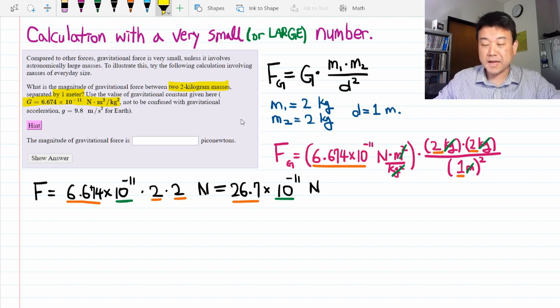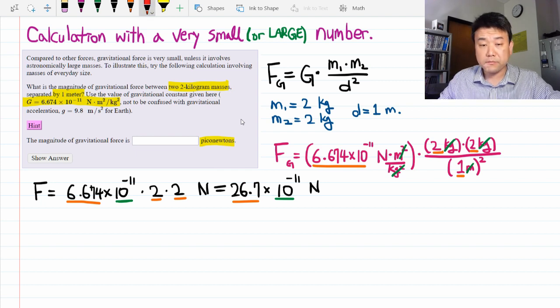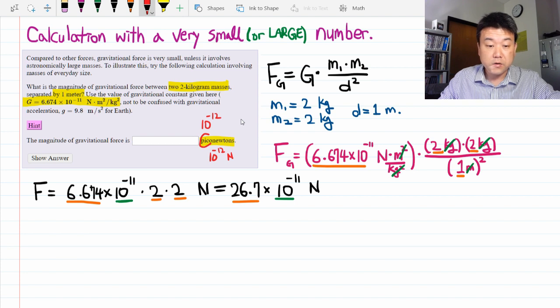Now it's not the number it's looking for because the question looks for the answer in piconewtons. So first you have to know how much piconewtons is, how it compares to newton. If you look up metric prefixes, you'll find that piconewtons stands for 10 to minus 12. So piconewtons is 10 to minus 12 newton.